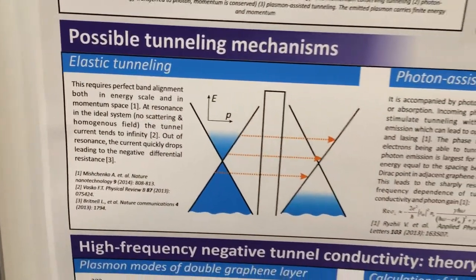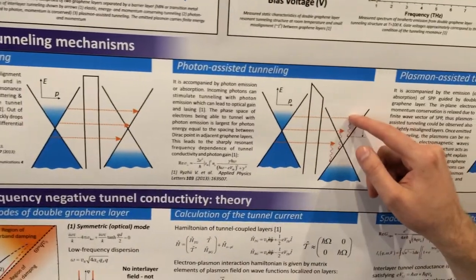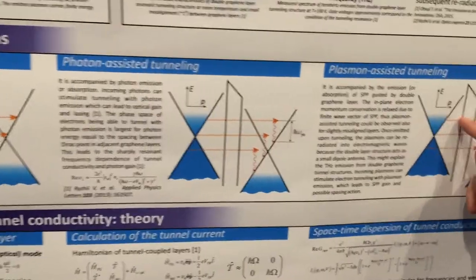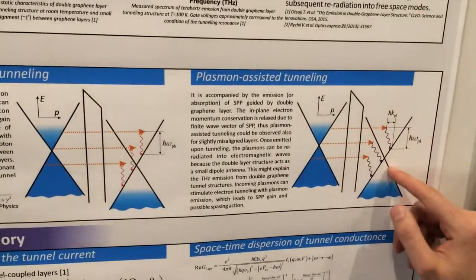In particular, it is possible that an electron tunnels to another layer with emission of photon, and it is possible that an electron tunnels from one layer to another with emission of plasmon.